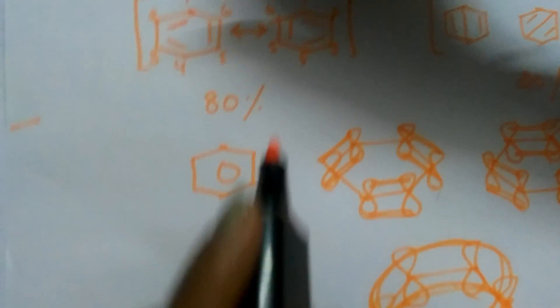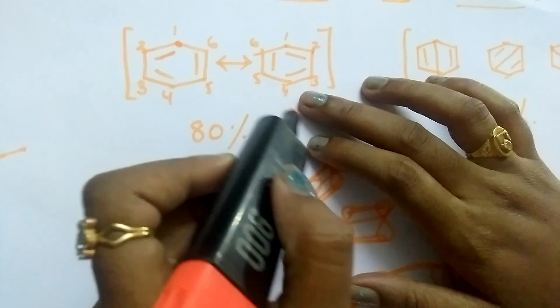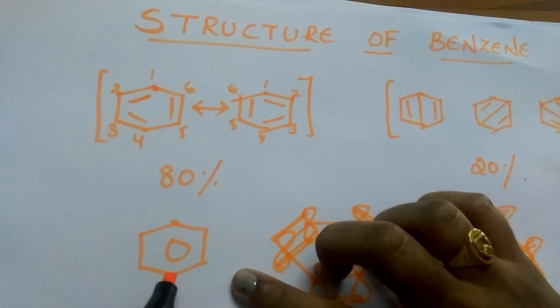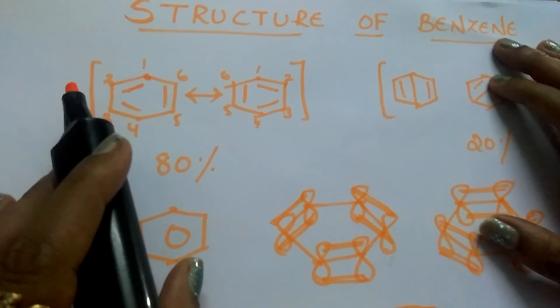These are the resonating structures. We can say these are the canonical structures of benzene. This is the resonance hybrid of benzene. This is the structure of benzene.